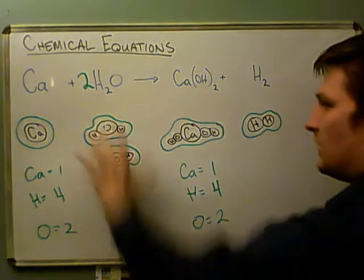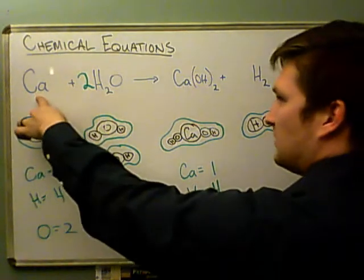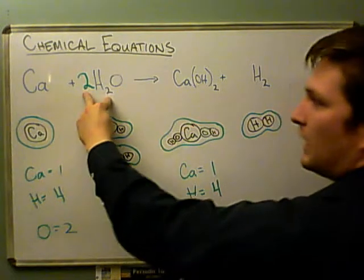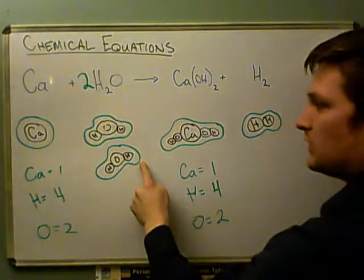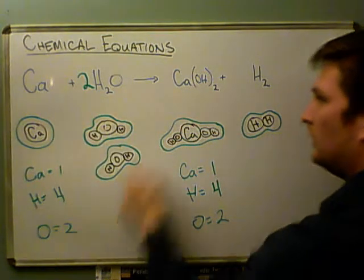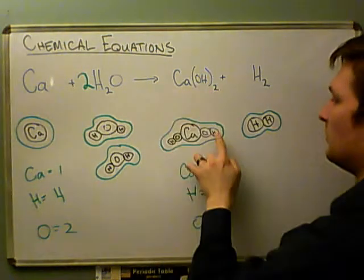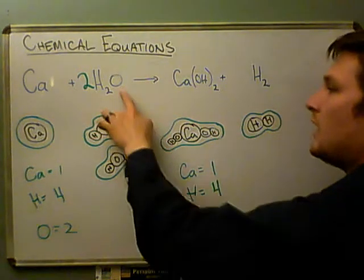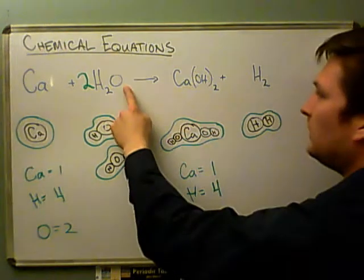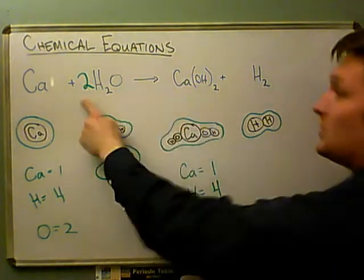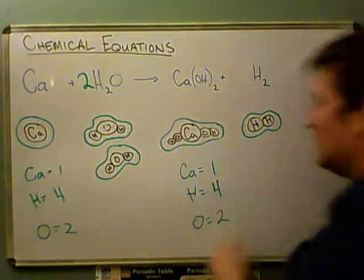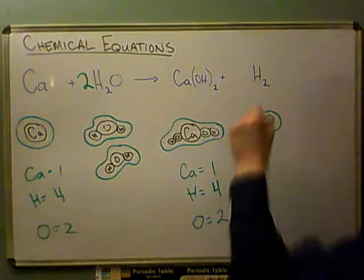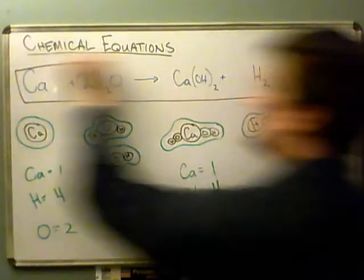So now we have, now let's just double check everything here. We have one calcium on this side, one calcium on this side. A total of four hydrogens, because we have these two molecules here, one, two, three, four, and how many hydrogens over here? Well, we have one, two, three, four total, that's good. Now how many oxygens do I have? I have one here, and two here, I'm sorry, two here, because we have the two molecules, and the two from here. So now I'm balanced. Now this is a correct chemical equation, because it's balanced.